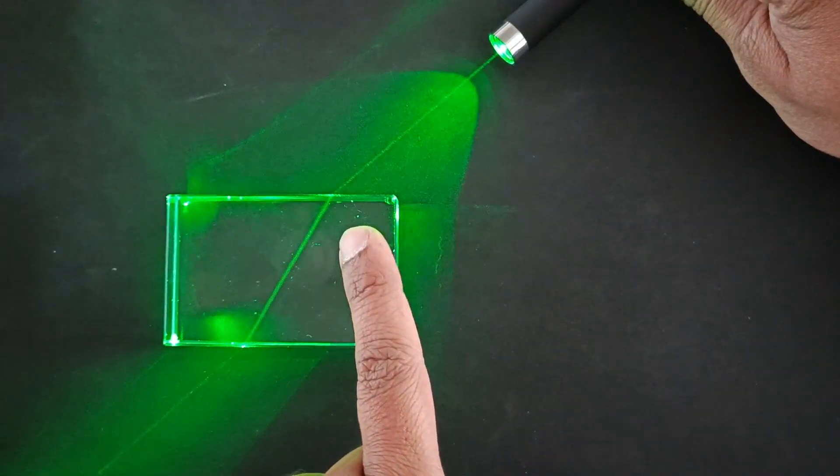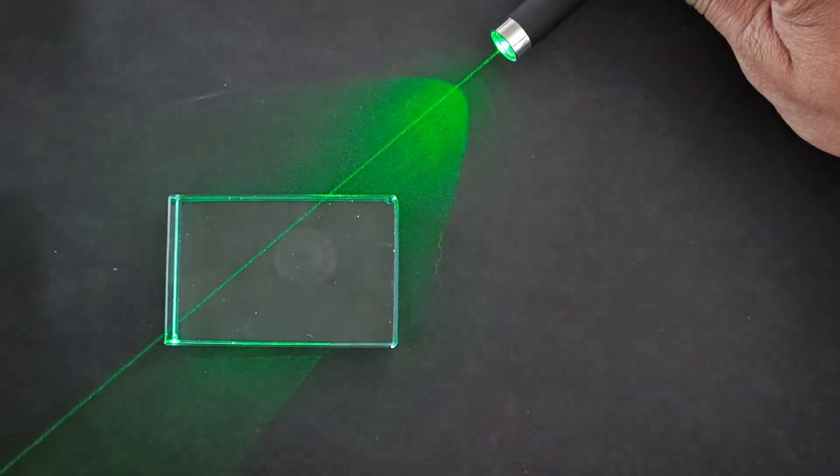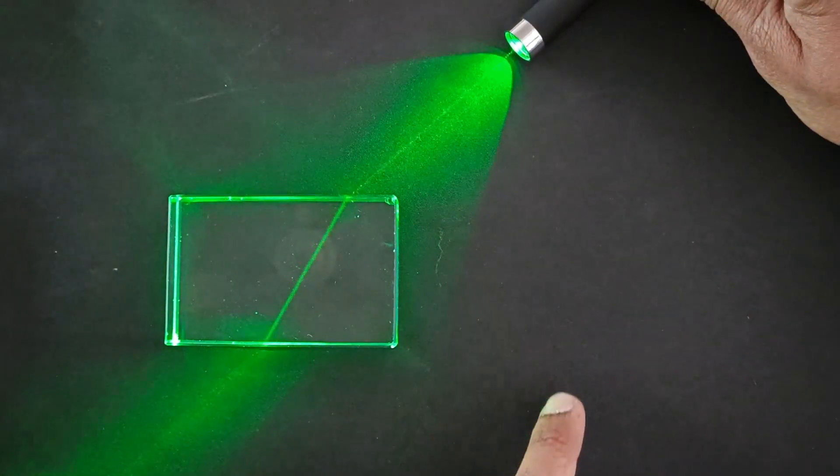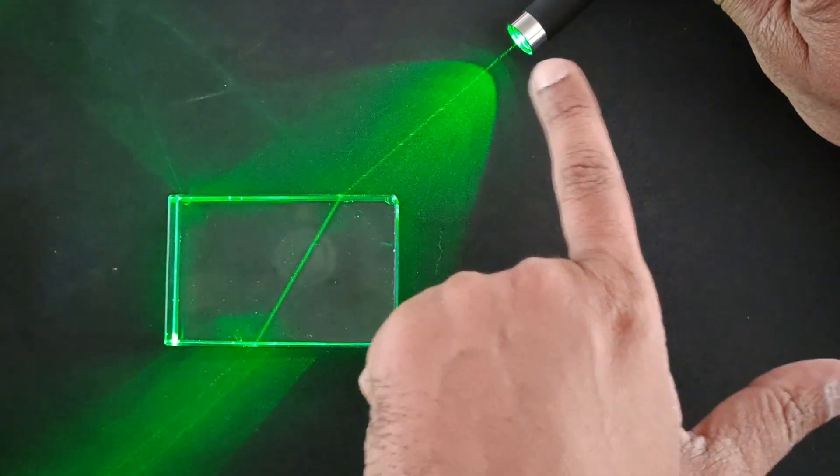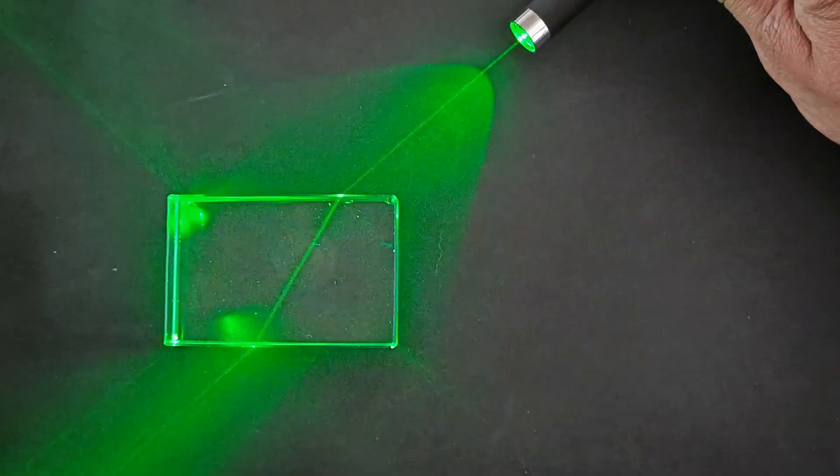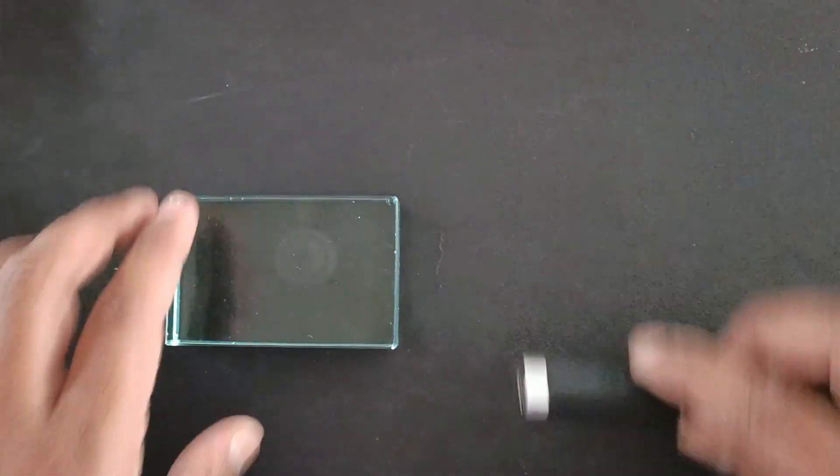After shining the laser light we can clearly see the bending of light, that is the refraction of light happening at the interface. Instead of light going straight, a shift is observed from its path which is known as lateral shift.